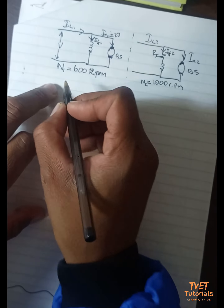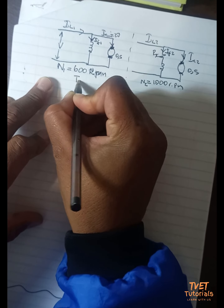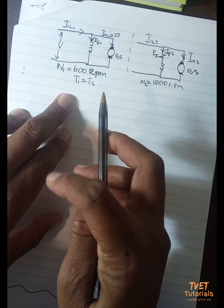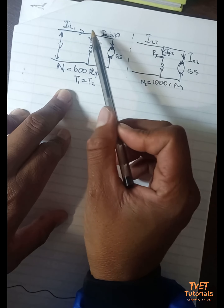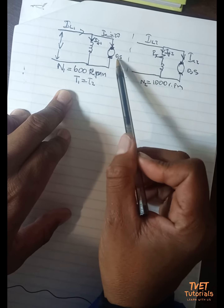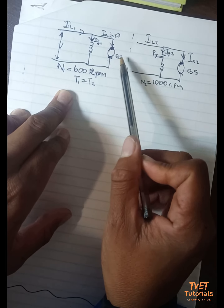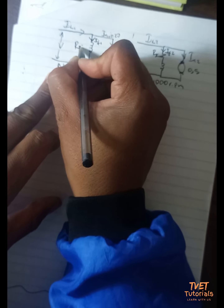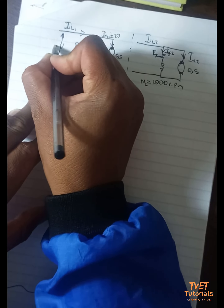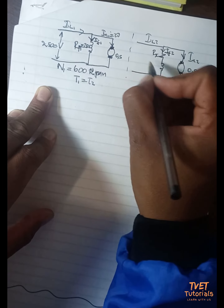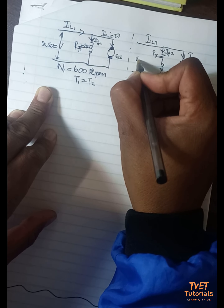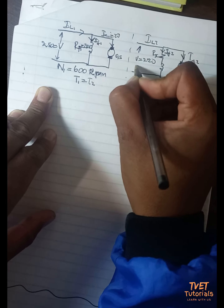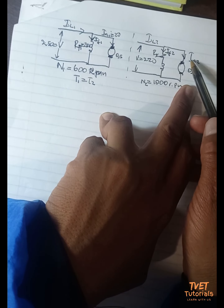From the given information: torque remains unchanged, so T1 equals T2. The armature current in condition 1, Ia1, is 20 amperes with armature resistance Ra of 0.5 ohms. The field resistance Rf1 equals 250 ohms, and the supply voltage V is 250 volts in both conditions.